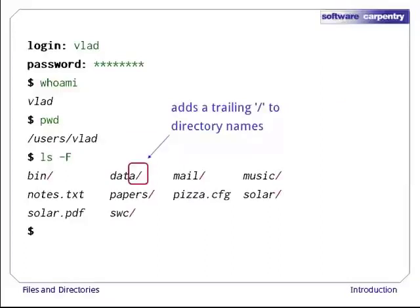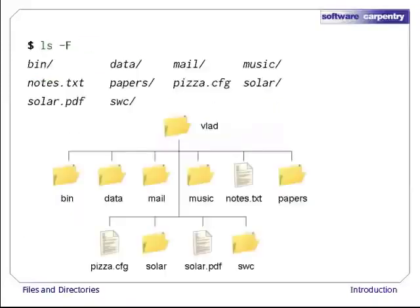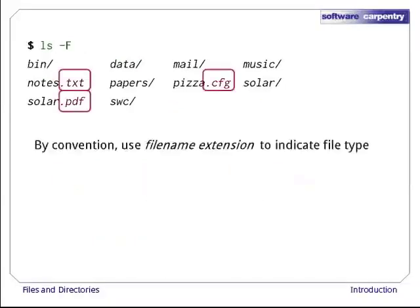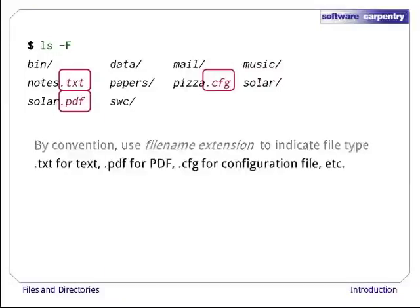As you can see, there are seven directories. The names without slashes — notes.txt, pizza.cfg, and solar.pdf — are plain old files. You may have noticed that the file names are all something dot something. By convention, the second part, called the file name extension, indicates what type of data the file holds. .txt signals a plain text file, .pdf indicates a PDF document, .cfg is a configuration file full of parameters for some program or other.